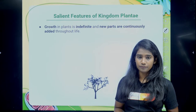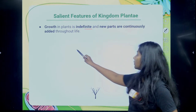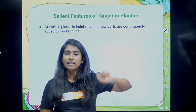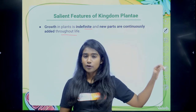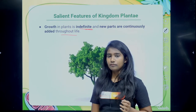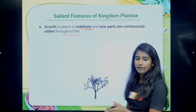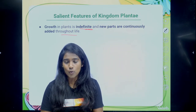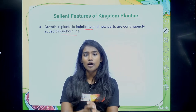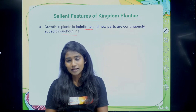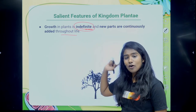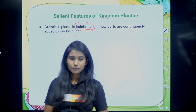The growth in plants is indefinite — new parts are continuously added throughout the life. This concept was covered in the tissue chapter of class 9th. The reason growth in plants is indefinite is the presence of meristematic tissues. Meristem is a Greek word meaning 'to divide.' Plants have meristematic tissue at the tip of the stem, tip of the root, around vascular bundles, and near internodes.